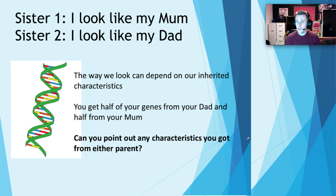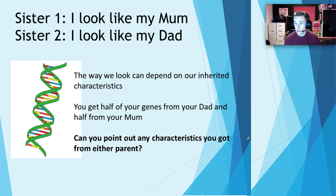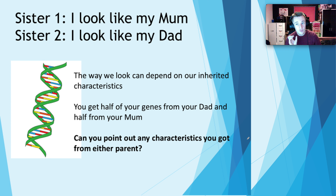So sister one says she looks like her mum and sister two says she looks like her dad. The way we look can depend on our inherited characteristics. You get half of your genes from your dad and half from your mum. So you may get some characteristics from your mum that your sibling doesn't get, and equally they could get some from their dad that you don't get. It's not guaranteed that children will get the exact same features from their parents — some features just aren't always inherited.